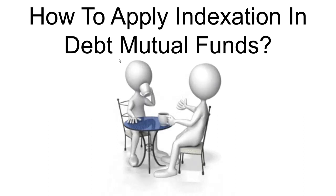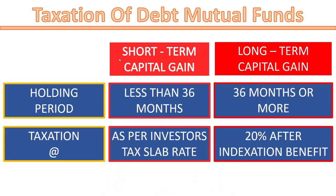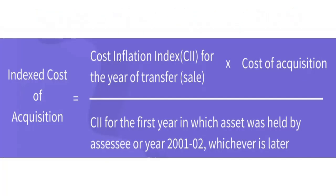We now look at how to apply the benefits of indexation to mutual funds. Indexation benefits are applied to long-term capital gains or LTCG in debt mutual funds. Such capital gains are taxed at 20% after using indexation benefit, and to fall under LTCG, the funds must be held for 36 months or more. As per the indexation benefit, the cost of acquisition or the original investment amount is indexed to account for inflation over the holding period. The formula for calculating the indexed cost of acquisition or ICOA is the original cost of acquisition multiplied by the CII for the year of sale divided by the CII of the year of purchase.